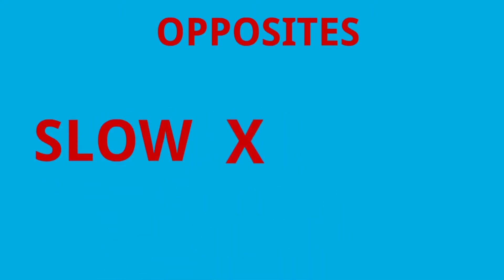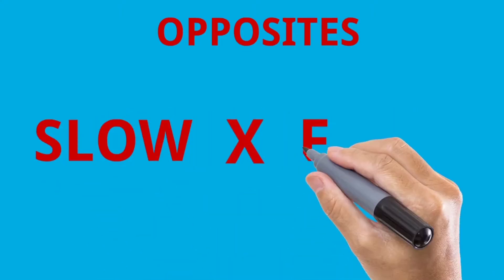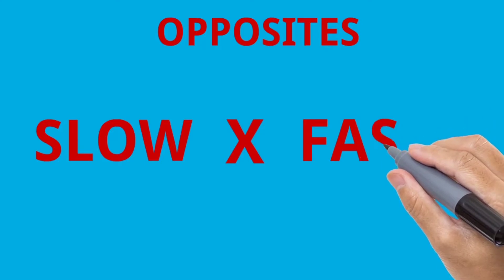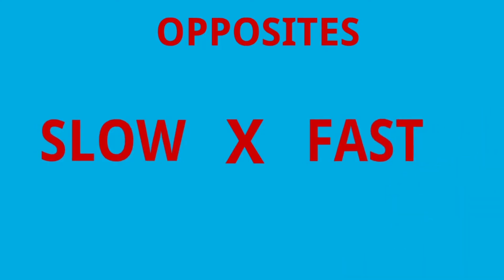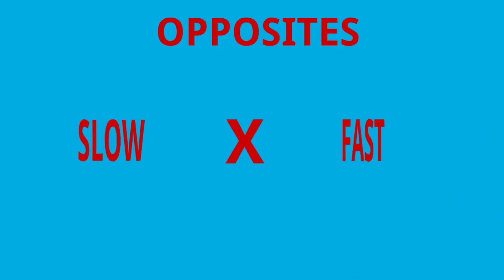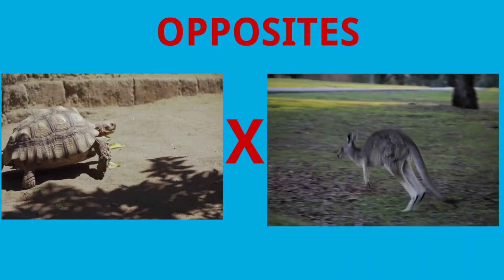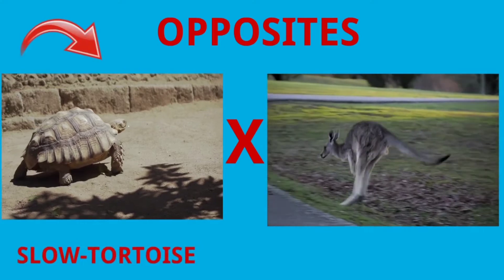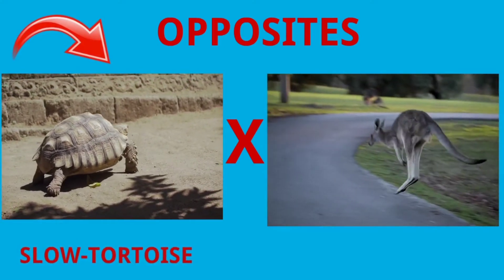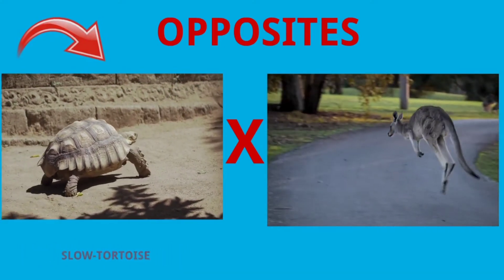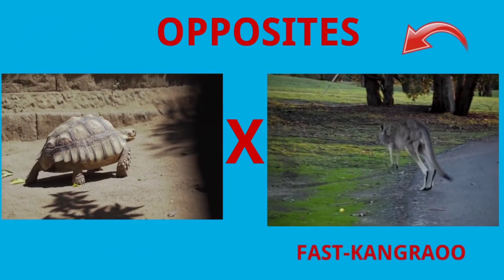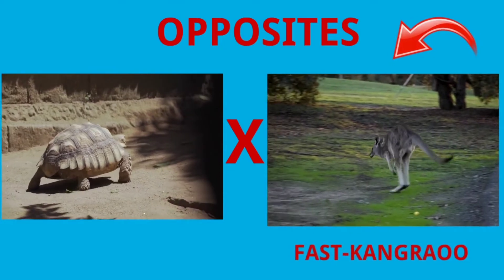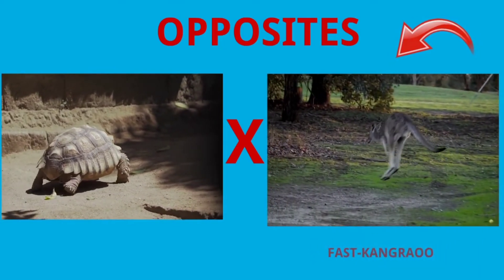Slow. Fast. Tortoise walks slow. Kangaroo jumps fast.